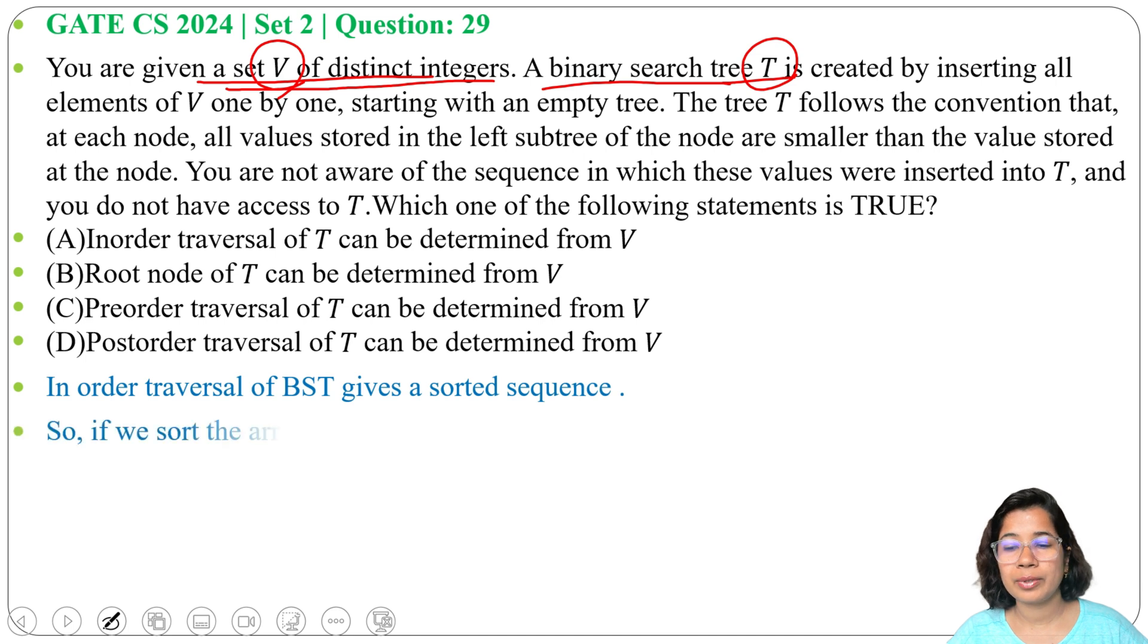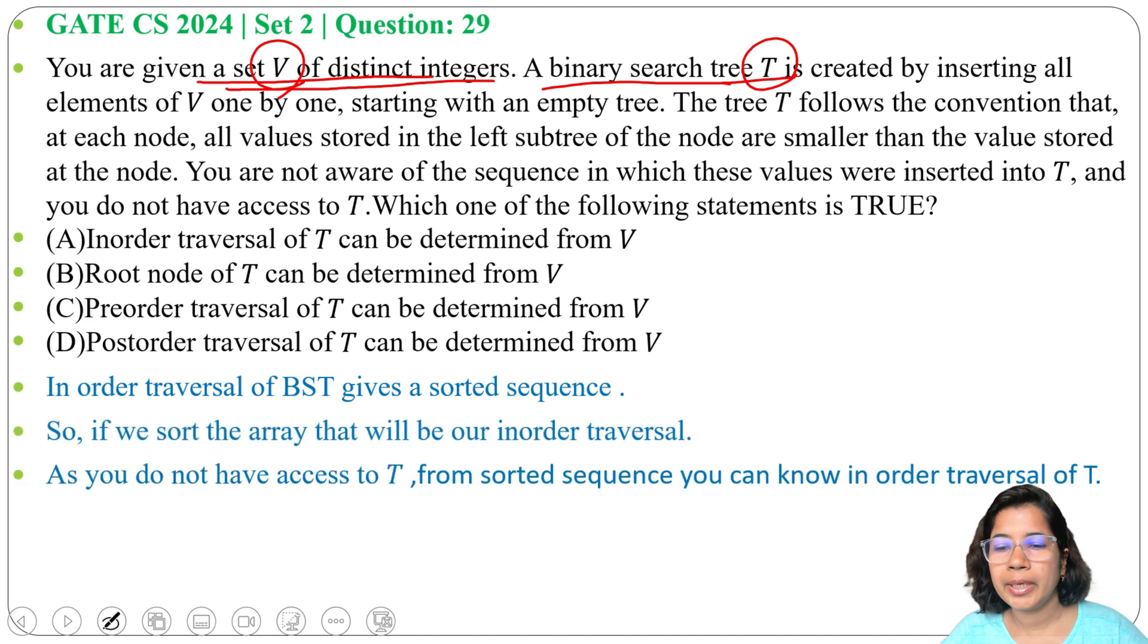Now option B: root node of T can be determined from V. No, this is wrong. Option C: preorder traversal of T can be determined from V. No, you have the array from that it cannot determine preorder traversal or root. Then option D: postorder traversal of T can be determined from V. No,